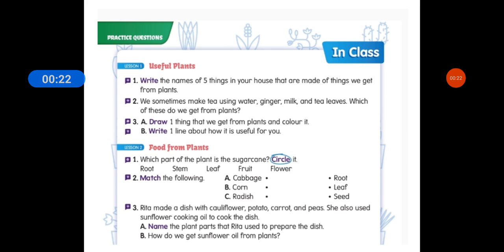So lesson number 1 is Useful Plants. First question is write the names of 5 things in your house that are made of things we get from plants. So you have to write 5 things in your house which we get from plants.